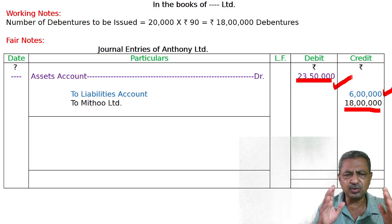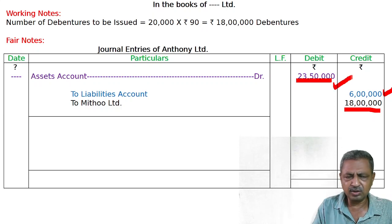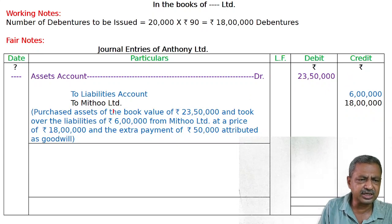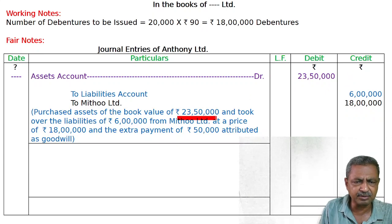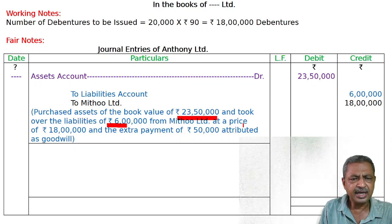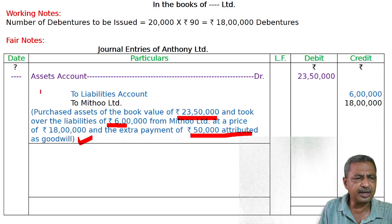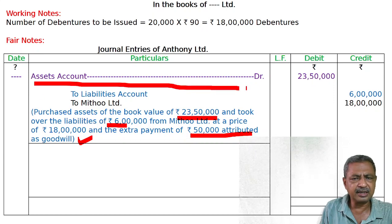This is due to goodwill. Goodwill account arises because assets of book value 23,50,000 were purchased and liabilities of 6,00,000 were taken over from Mithu Limited at a price of 18,00,000. The extra payment of 50,000 is attributed as goodwill.